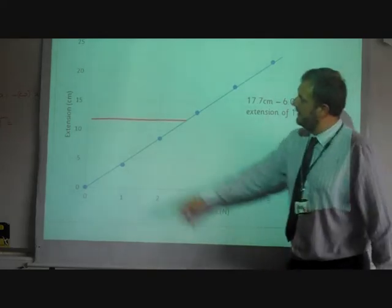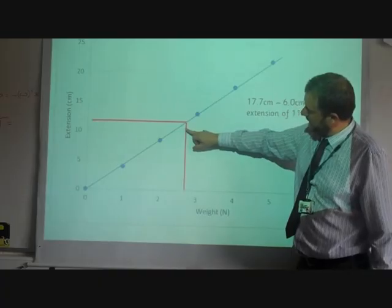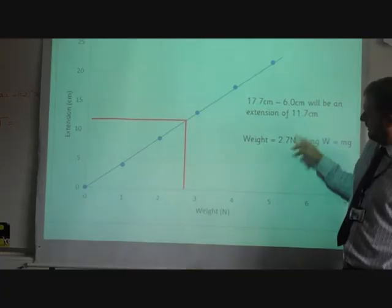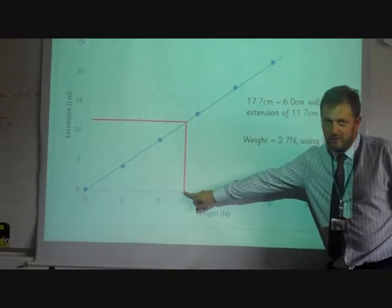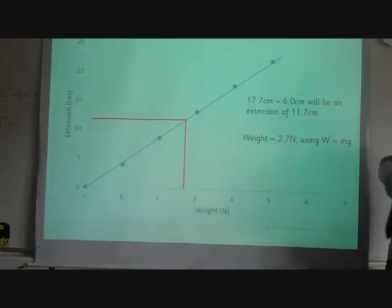If we use our graph, this is about 11.7. If we read off, we think that the weight that would give us an extension of 11.7 is about 2.7 newtons. So that 2.7 newtons is a weight. We want to know the mass.